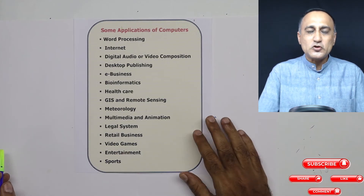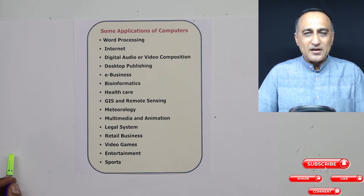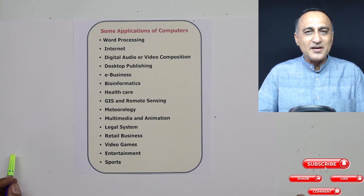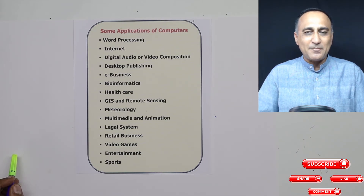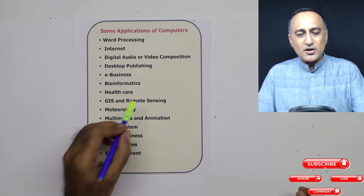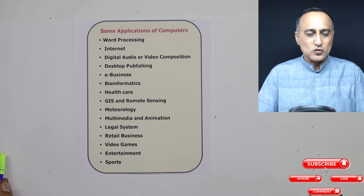GIS stands for Geographic Information Systems. Suppose in 1980 I have a picture of how Uttarakhand looked in terms of forest cover. I can take pictures now and send them to the computer, and it will tell me that in 1980 Uttarakhand had 80% forests, but today a 10% loss of forest has happened in a particular area. So geographical information systems and remote sensing are graphical applications used in domains like geology and so on.